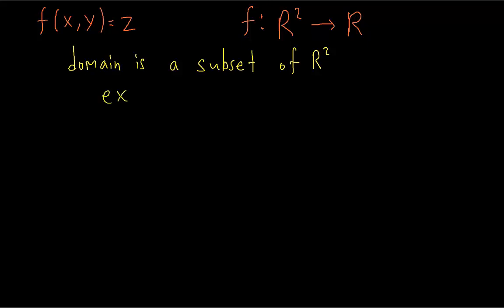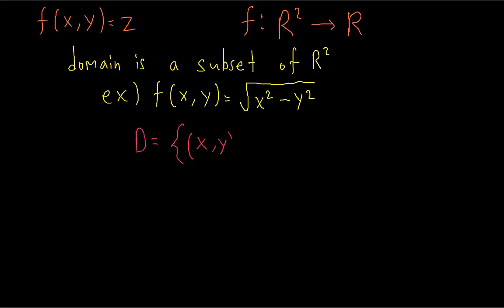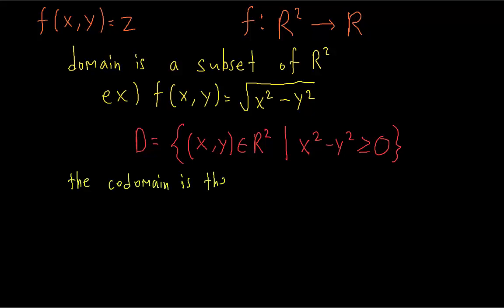For example, this function can only be defined when x² minus y² is greater than or equal to zero. So the domain of this function is all pairs of real numbers in R² such that x² minus y² is greater than or equal to zero. We can't just pick any pair of real numbers — we have to make sure the square root is defined. The codomain is the set of possible outputs, and in this case that is R, the real number line.